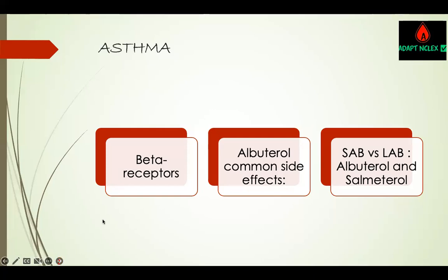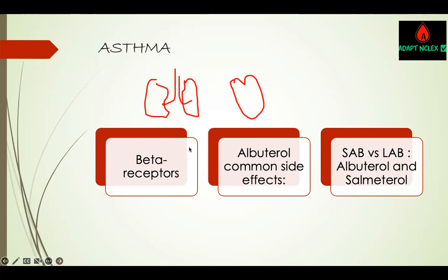Before we go into treatment, pay attention to beta receptors. You have two lungs and one heart. The heart has beta-1 receptors. The lungs have beta-2 receptors. There are medications that bind to these receptors — some bind to beta-1, some to beta-2. When it comes to treating asthma, you have to pay attention to which receptor these medications target.